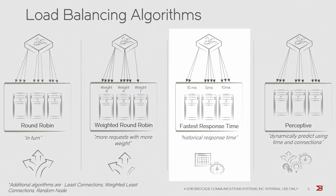The fastest response time algorithm monitors the response time for recent requests to each node and sends each new request to the node that has recently been responding the most quickly. This algorithm is similar to the perceptive algorithm, but is based purely on historical data and may not behave as well when the traffic type is changing or heavily varied.